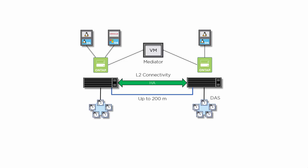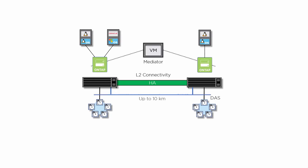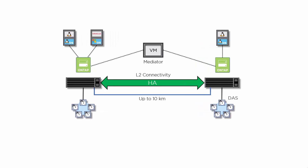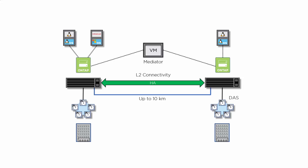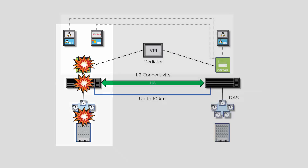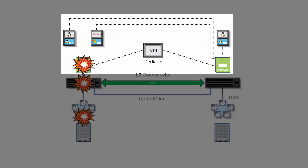ONTAP MetroCluster SDS is an entry-level MetroCluster solution. It provides a stretched high availability solution that extends the maximum inter-node distance for ONTAP select from 200 meters up to 10 kilometers. This allows you to split node pairs between data centers in different buildings across a campus network. Placing nodes in different physical locations provides an extra level of protection against local unplanned events such as fire, floods, or power outages, while still leveraging the benefits of ONTAP select software-defined storage. Failover response is completely automatic with no human intervention required.